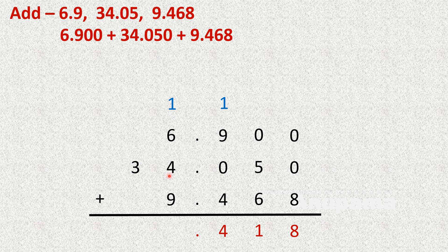Tens column: 2 plus 3 is 5. So your answer is 50.418. Very simple.